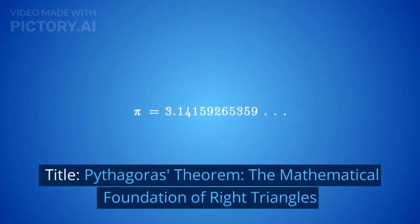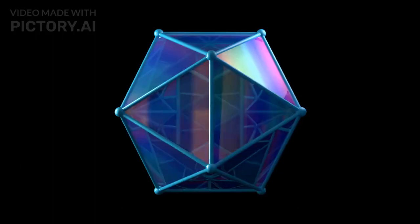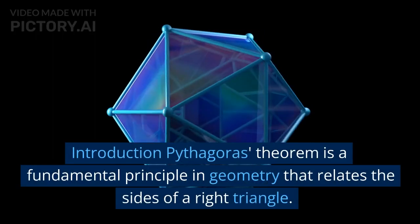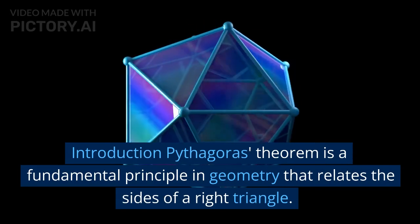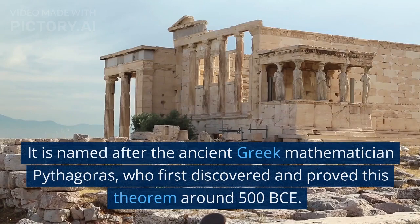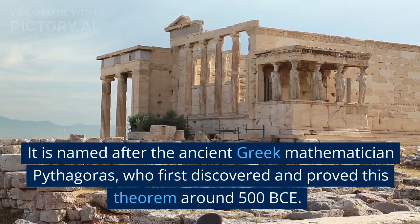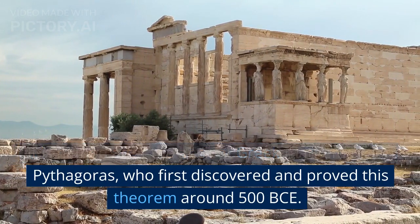Pythagoras' Theorem: The Mathematical Foundation of Right Triangles. Introduction: Pythagoras' theorem is a fundamental principle in geometry that relates the sides of a right triangle. It is named after the ancient Greek mathematician Pythagoras, who first discovered and proved this theorem around 500 BCE.